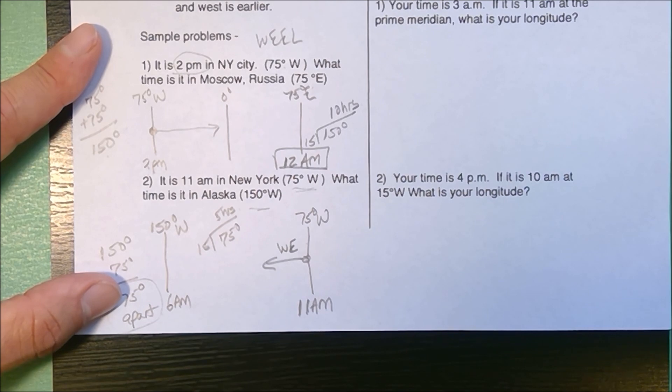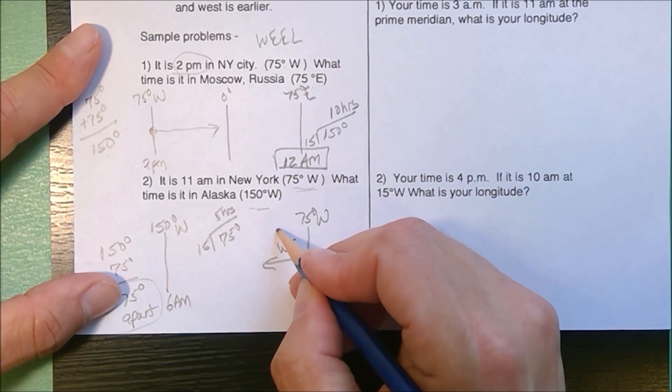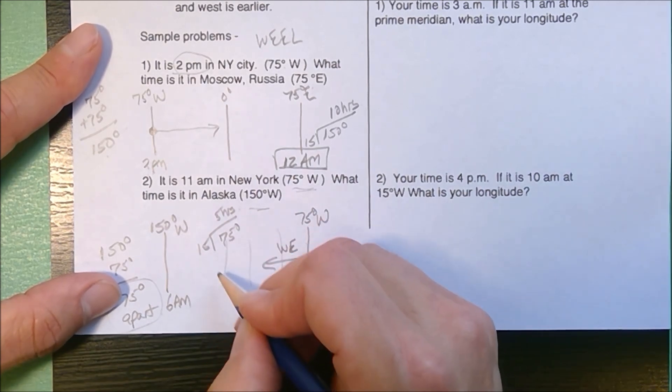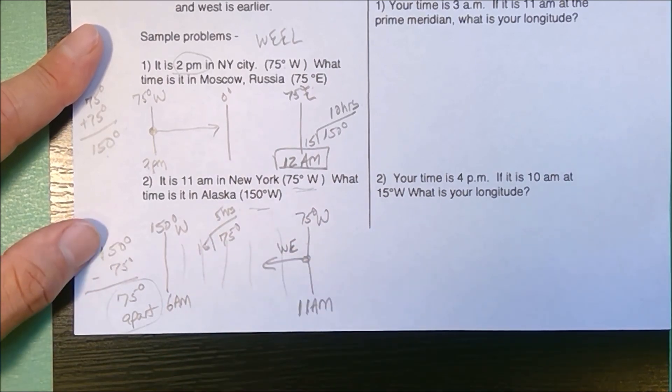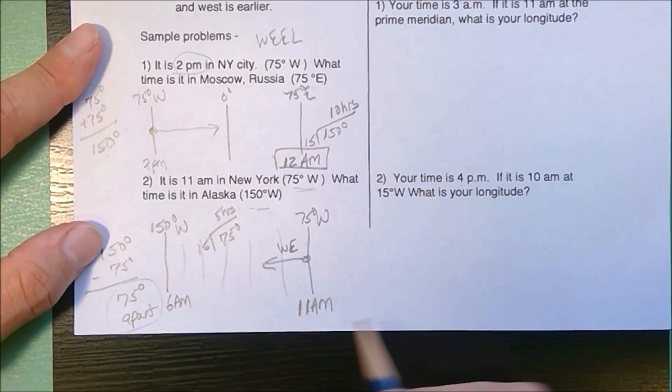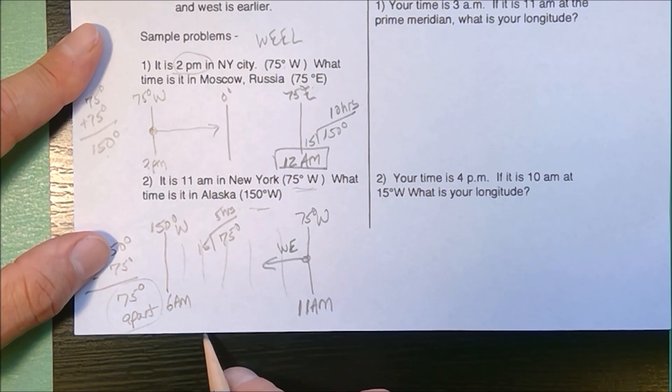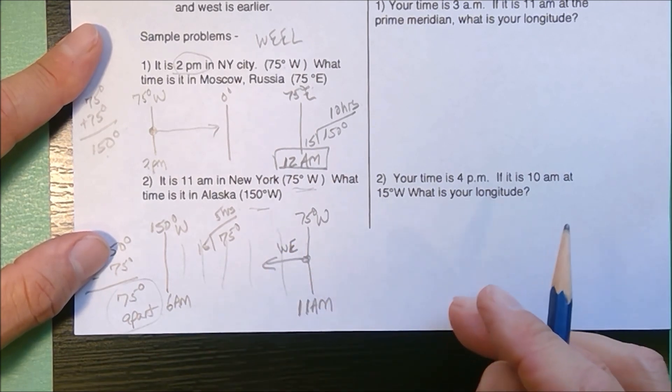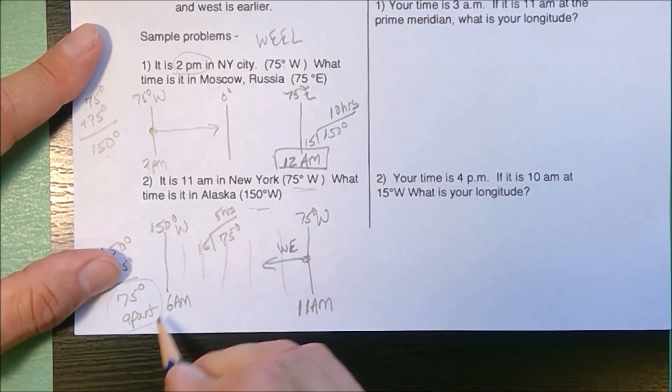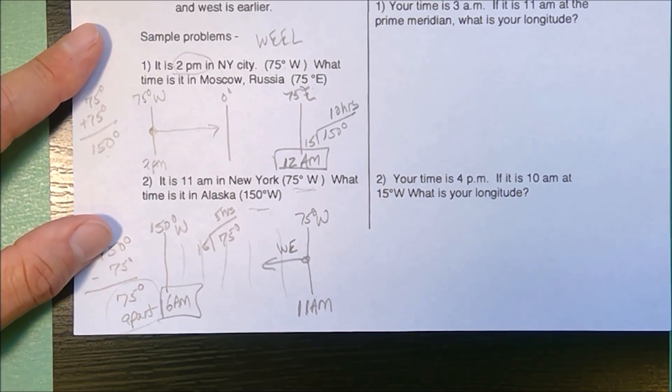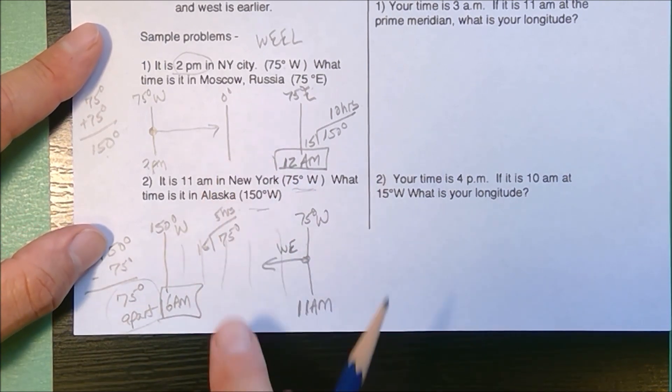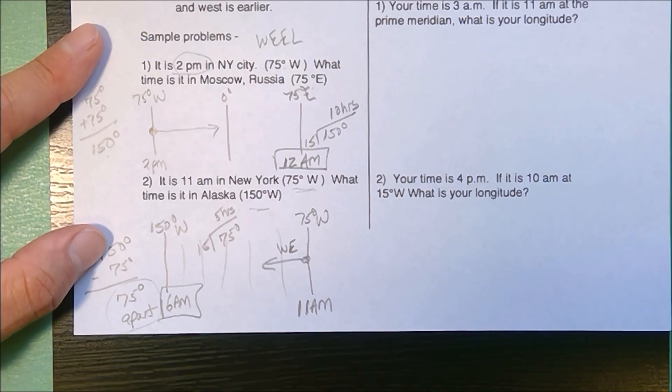You could also do this where you're drawing every line for 15 degrees and label each line. It works, it just takes a lot more time and a lot more lines. I'm usually just going to do it mathematically. So these problems were two longitudes in one time.